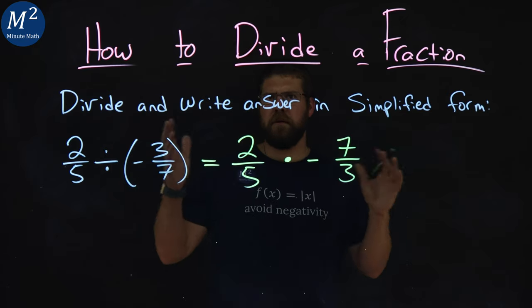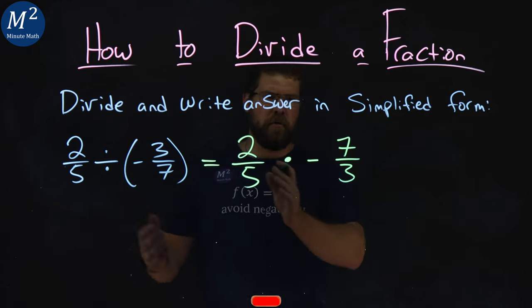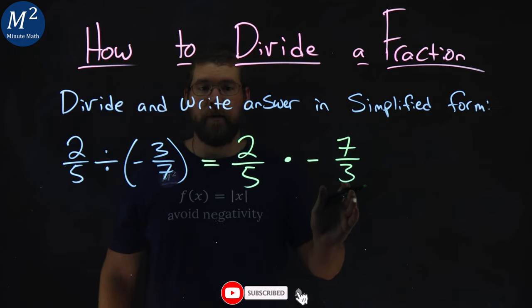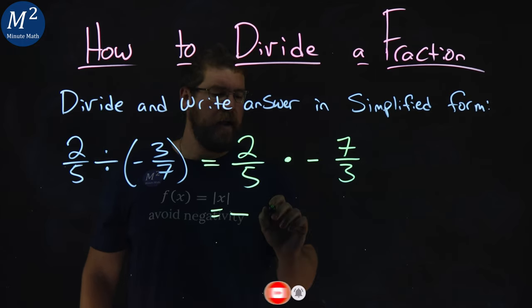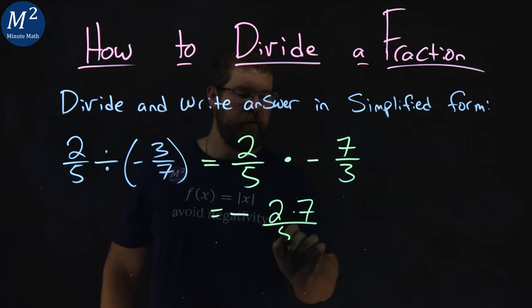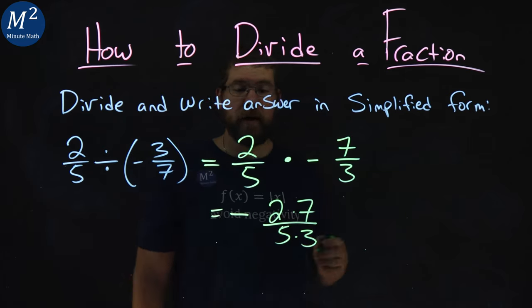And our rules still apply for multiplication. Multiply across the numerator and the denominator. So, we have equal here. Let's put the negative on the outside here. And I have a two times a seven in the numerator, and a five times a three in the denominator.